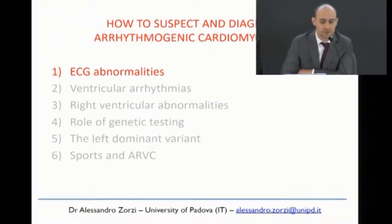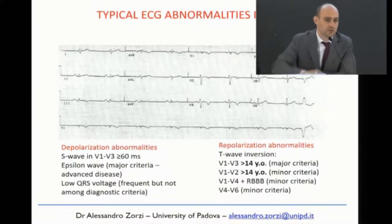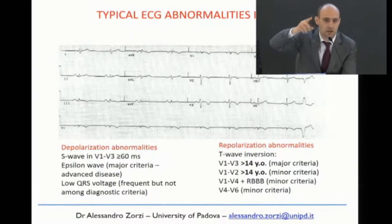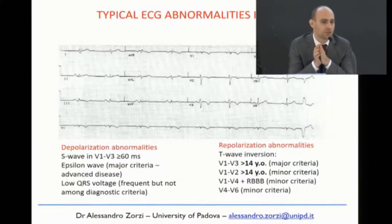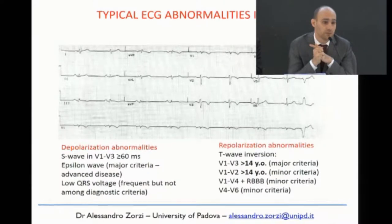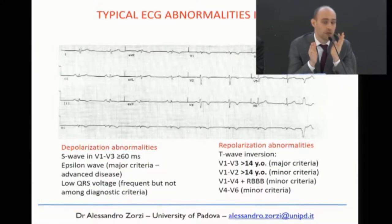The first feature of ARVC is electrocardiographic abnormalities. The famous Veneto curve showing a 19% decrease in sudden cardiac death in athletes after implementation of the Italian ECG-based pre-participation screening was largely due to identification of cardiomyopathies — in particular arrhythmogenic cardiomyopathies, which demonstrate prominent ECG abnormalities in 50–60% of patients. Importantly, ECG abnormalities are seen in 80–90% of patients who experience life-threatening arrhythmias, so the ECG is abnormal in the vast majority of those at highest risk.